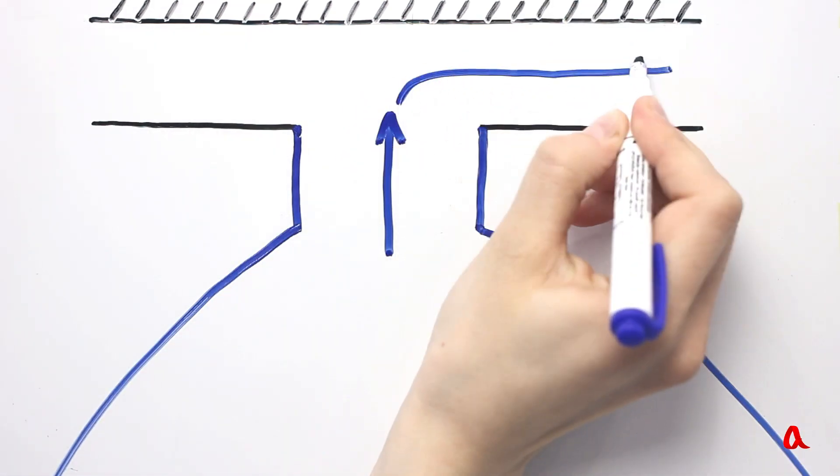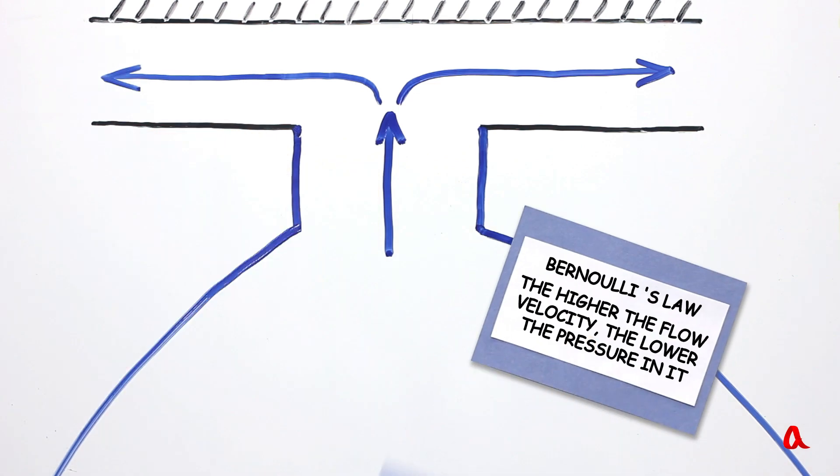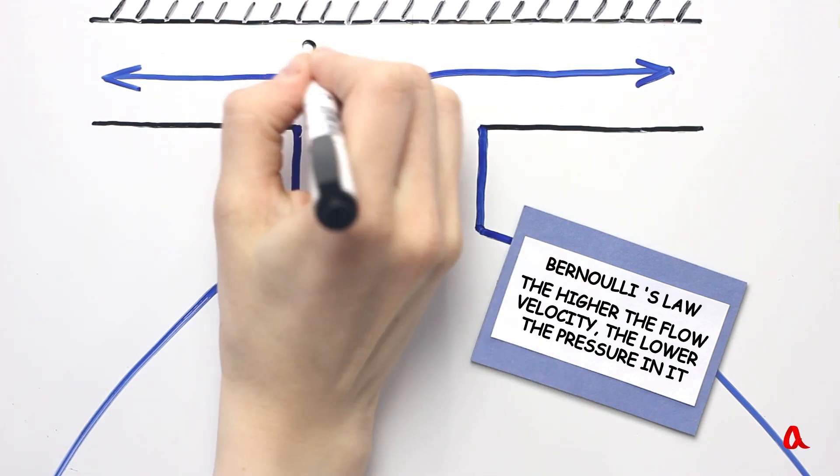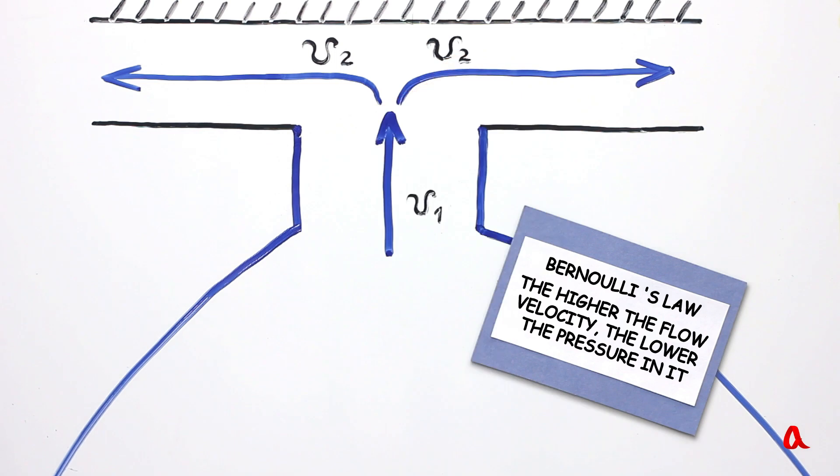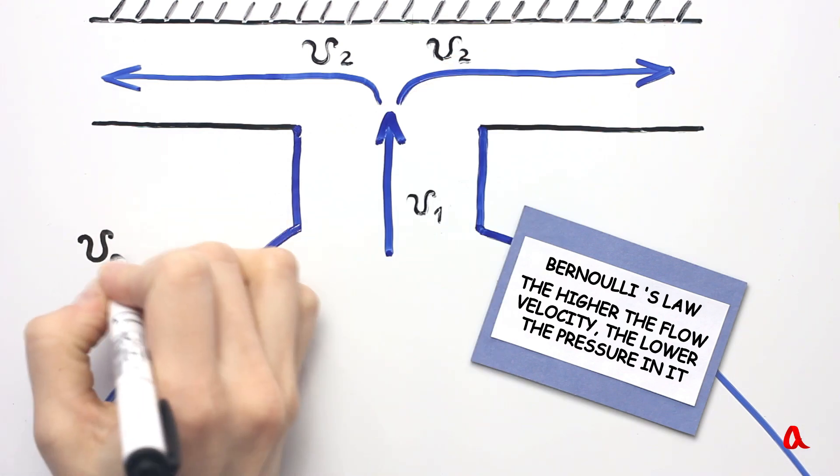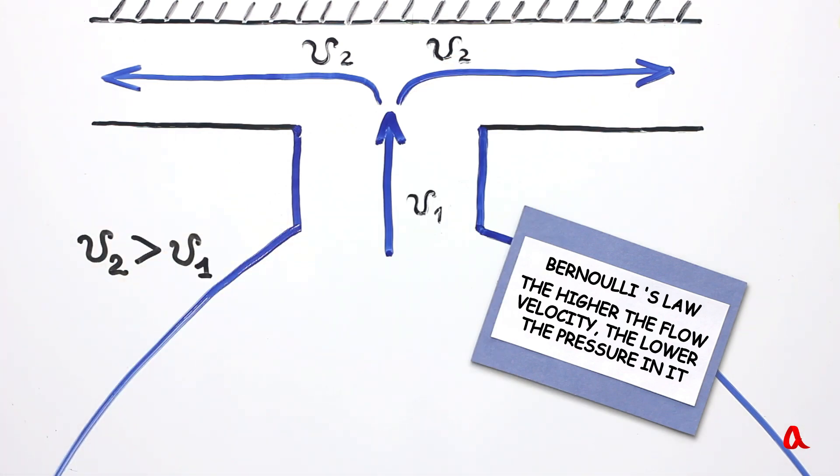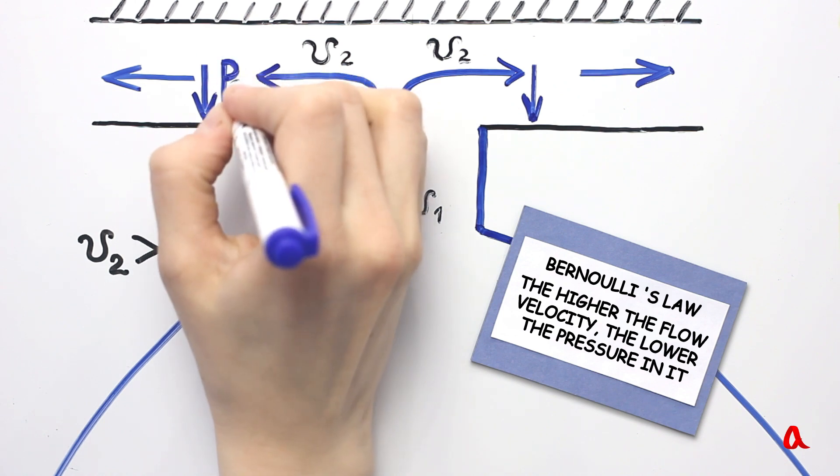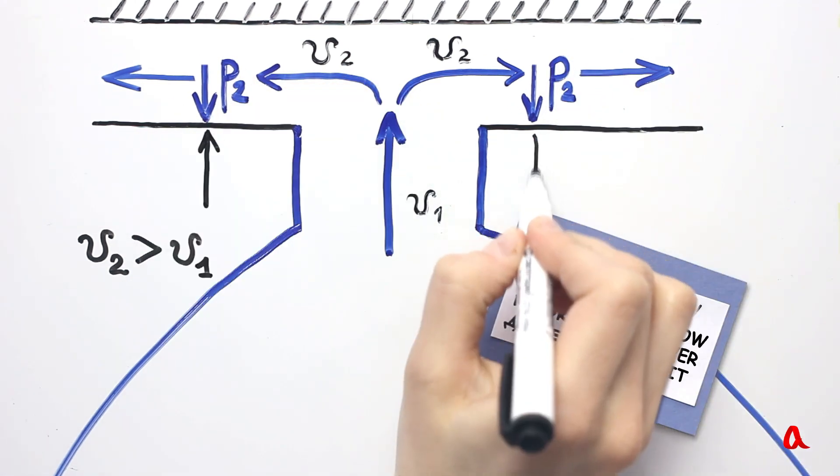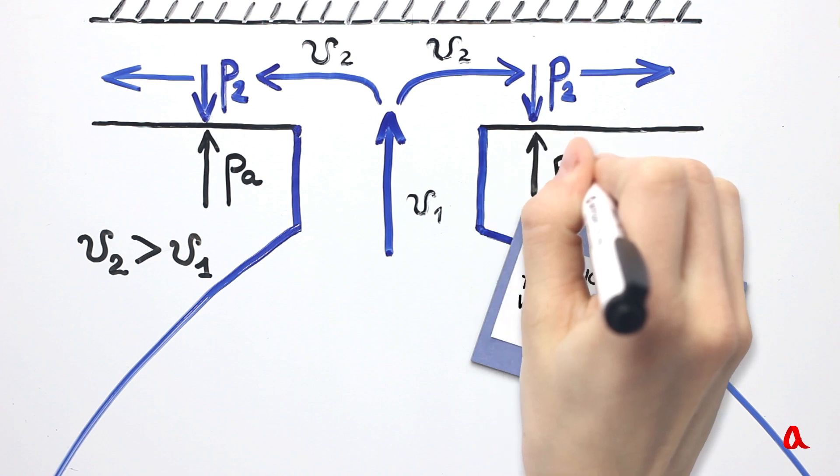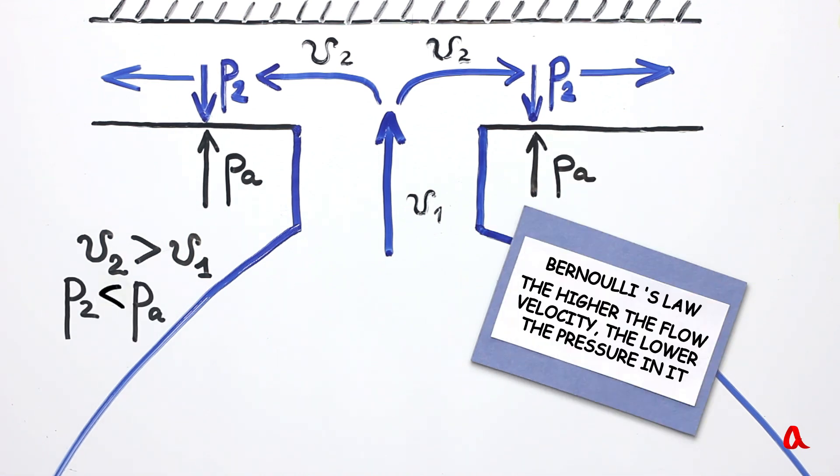Let's recall Bernoulli's principle, which states the greater the speed of the flow, the lower the pressure inside it. When the air from the balloon rushes out of a wide nozzle into the narrow slot between the disc and the ceiling, the balloon's speed rises sharply, which means the pressure inside it falls as sharply and becomes lower than the atmospheric one. So the atmospheric pressure presses the disc against the ceiling.